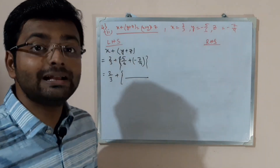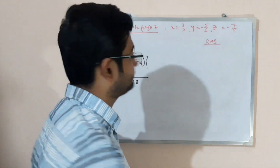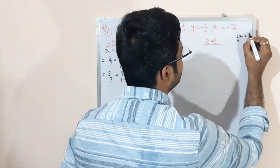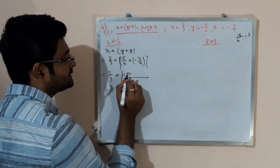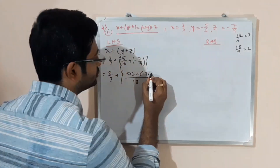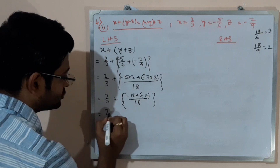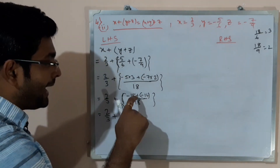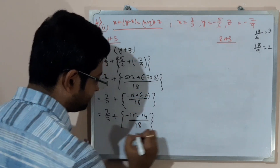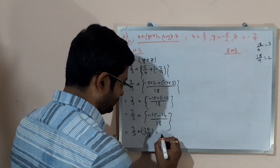LCM of 6 and 9 is 18. Write 18 first — do this LCM calculation in rough. Divide 18 by 6 to get 3: minus 5 multiplied by 3, plus bracket minus 7 times — divide 18 by 9 to get 2, so times 2. That gives minus 15 plus minus 14 over 18. Plus minus gives minus: minus 15 minus 14 equals minus 29 by 18.